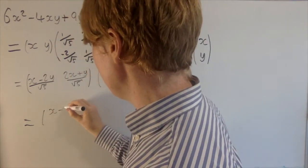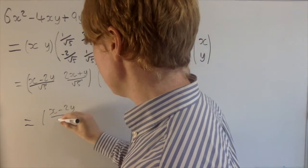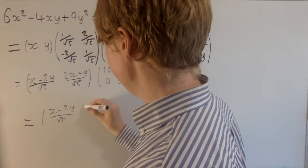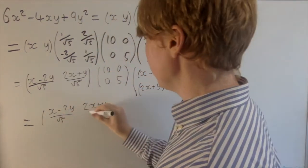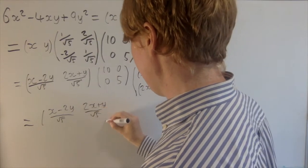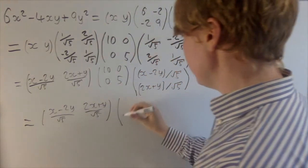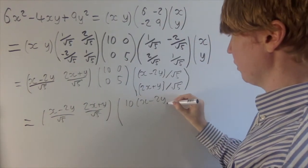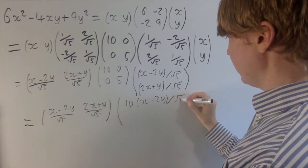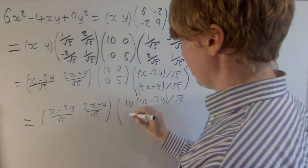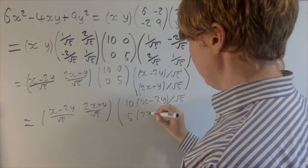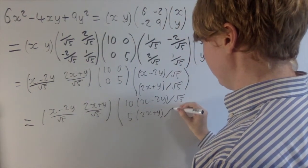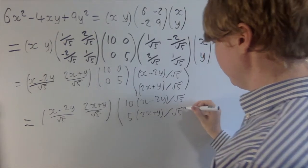So I'll leave this first vector just as it was: 2x plus y over root 5. And then what we're multiplying by is 10 times x minus 2y over root 5, and we'll get 5 times 2x plus y over root 5 like this.